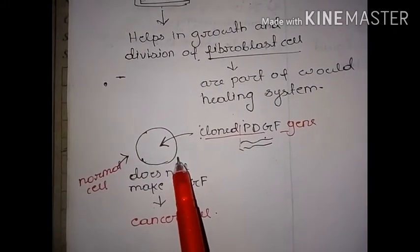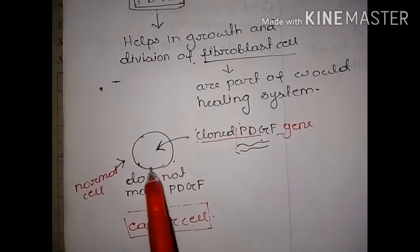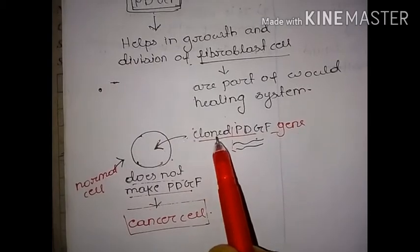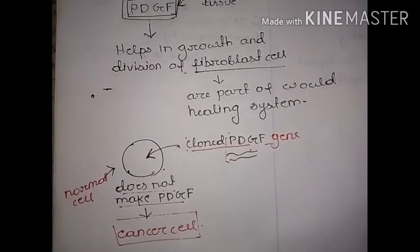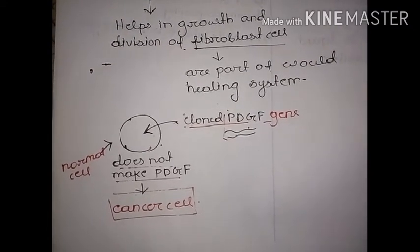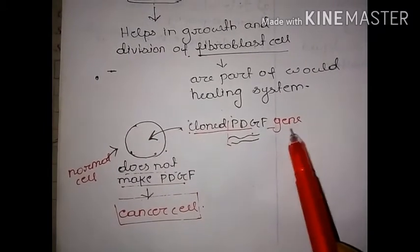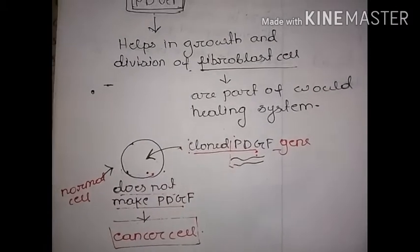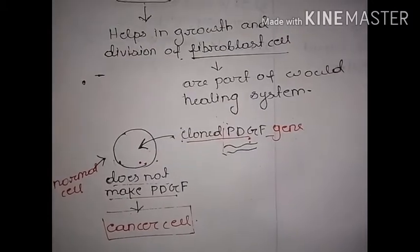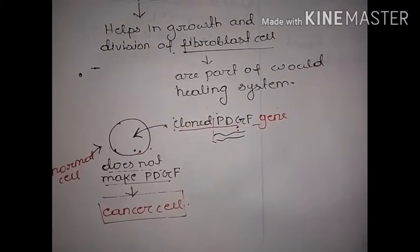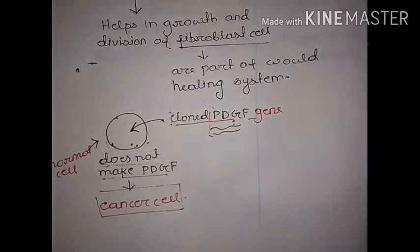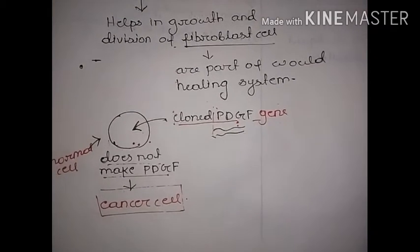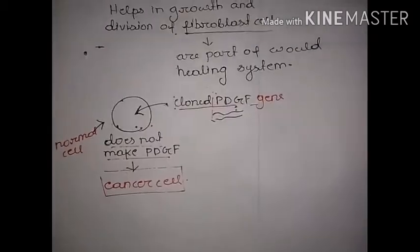The externally introduced cloned PDGF gene can transform a normal cell into a cancer cell. That specific cell normally does not make PDGF, but when we introduce the cloned PDGF gene from an external source, it leads to a normal cell transforming into a cancer cell. This may be because this factor activates some signaling pathways inside that particular cell that do not occur normally, or the cloned PDGF constitutively expresses some genes that are not expressed or are less expressed in the normal cell. That is why a normal cell is transformed into a cancer cell.